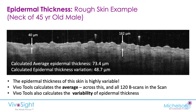Here's an example: the neck of a 45-year-old male with quite rough skin. You can see that the epidermal thickness is varying quite a lot, from 40 microns on one end to 160 microns on the other. The average epidermal thickness across the entire skin area is 73.4 microns, and the average variation across that whole area is 48.7 microns. This gives us a good idea of not only the average thickness but also how much that thickness is varying.